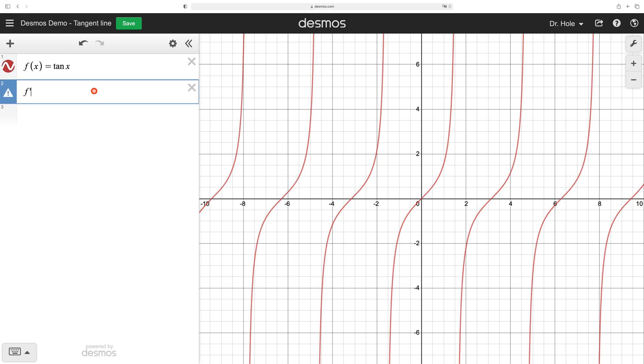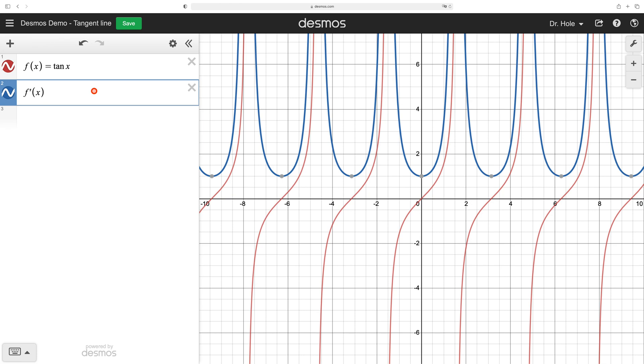Desmos has built in the ability to take derivatives. We can compute a derivative using the prime notation. Double check that we have the correct graph. We know the derivative of tangent is secant squared. Secant squared x. Take a look. You have the green graph overlaying the blue graph, which is the graph of f prime. So it looks good.